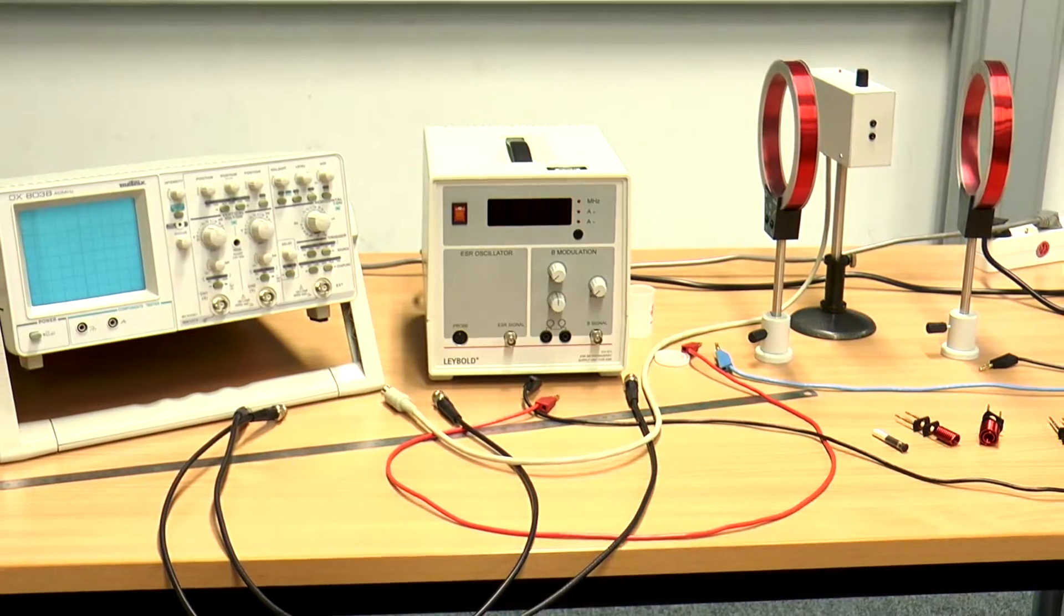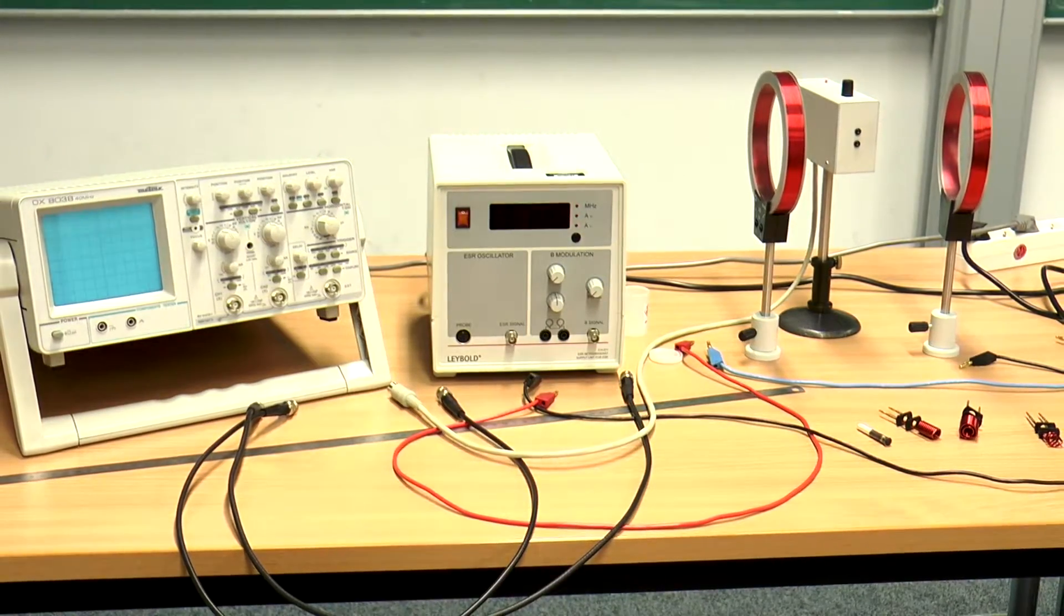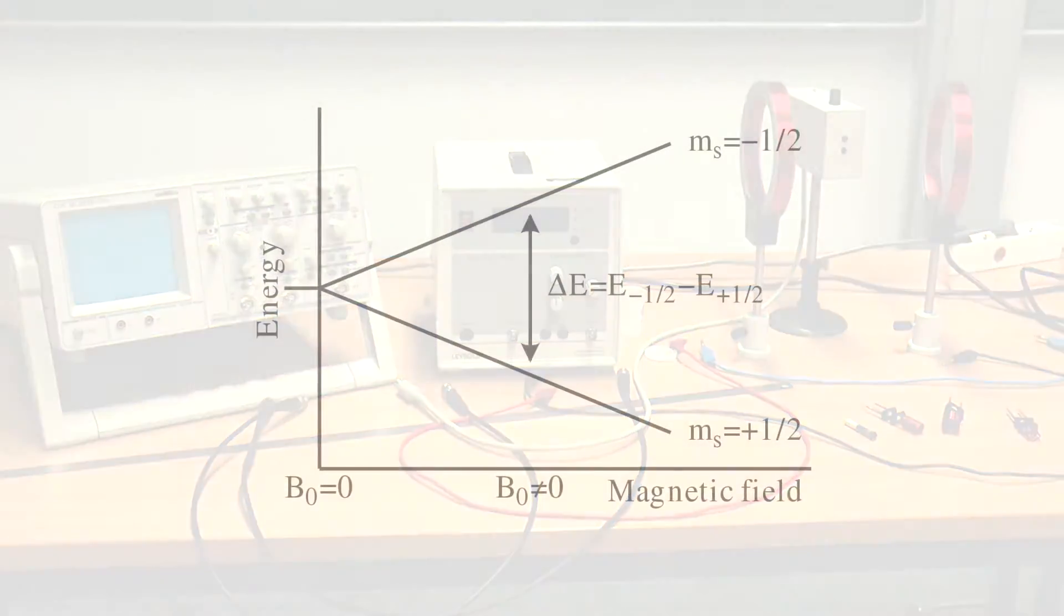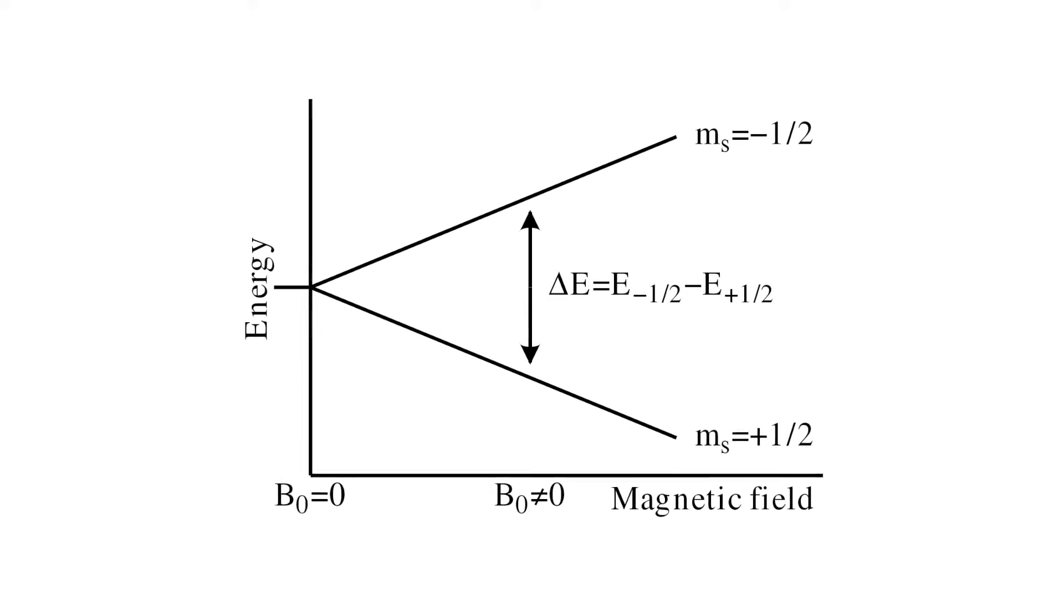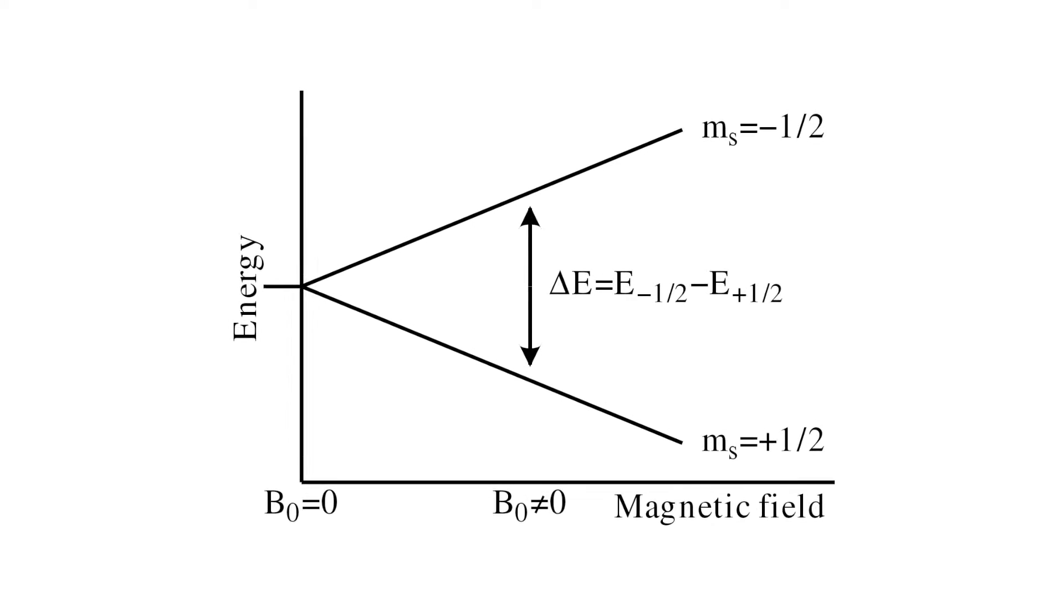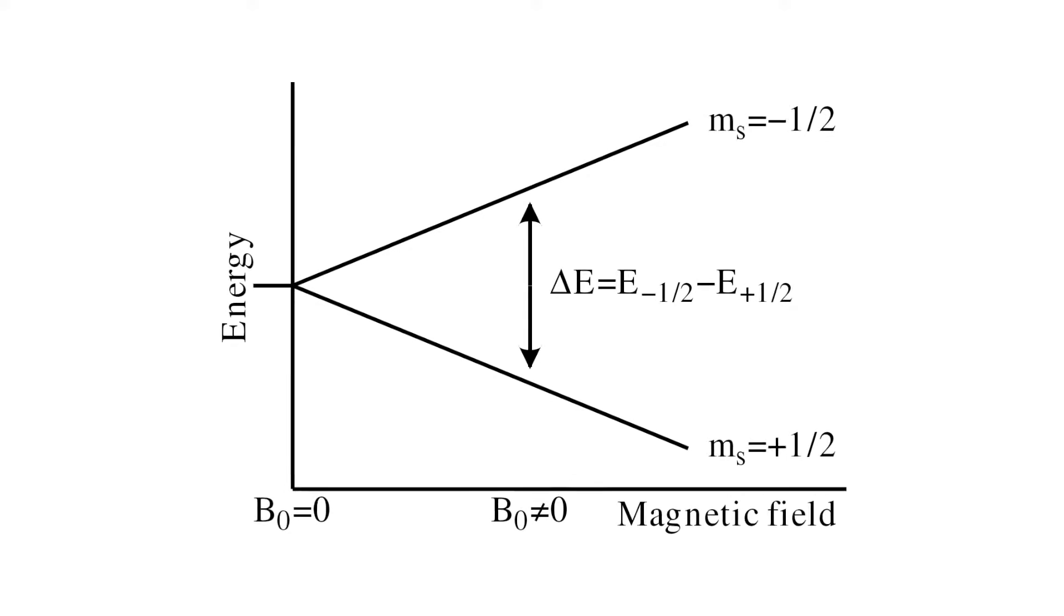The splitting of energy levels of an atom in an external field can be measured by the direct transition between energy levels called electron spin resonance (ESR), instead of splitting in the emission lines, which is measured in the Zeeman effect.